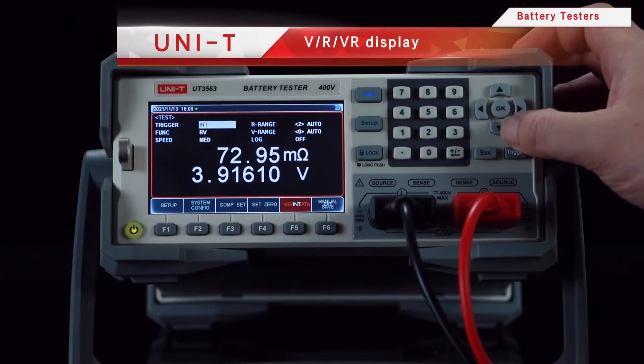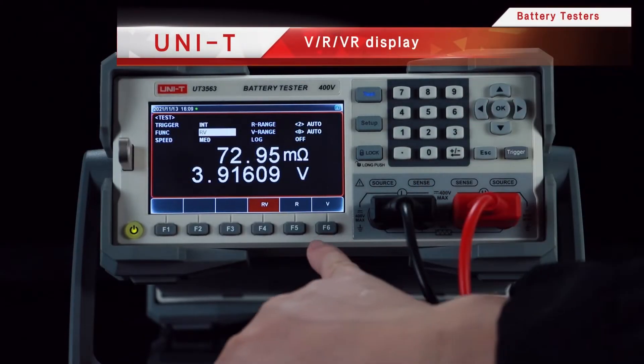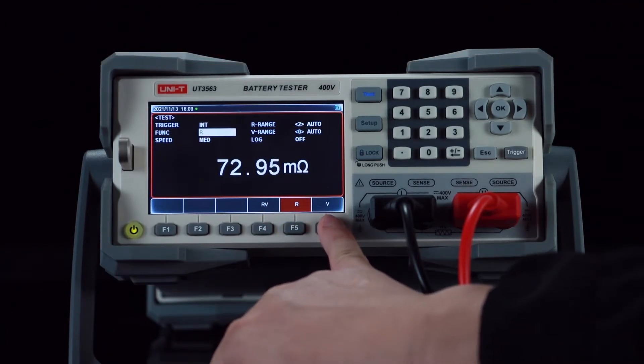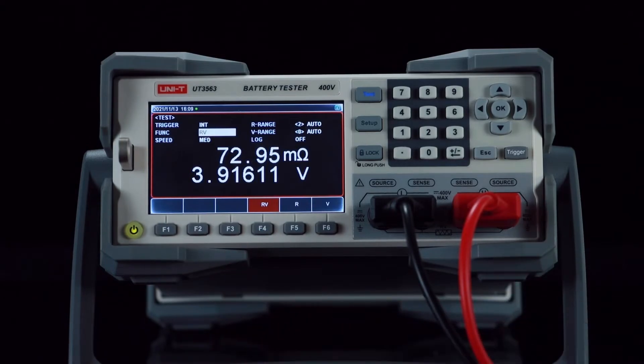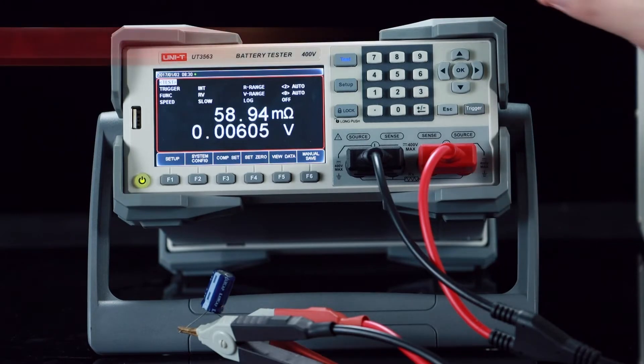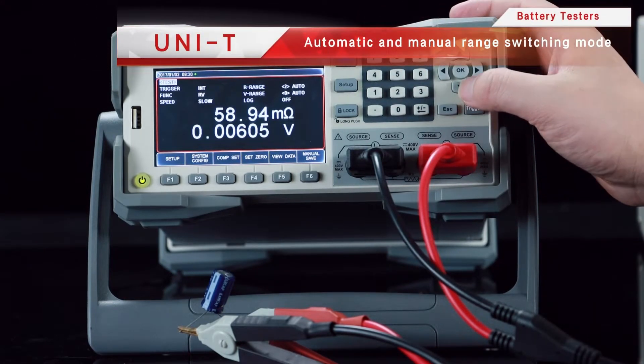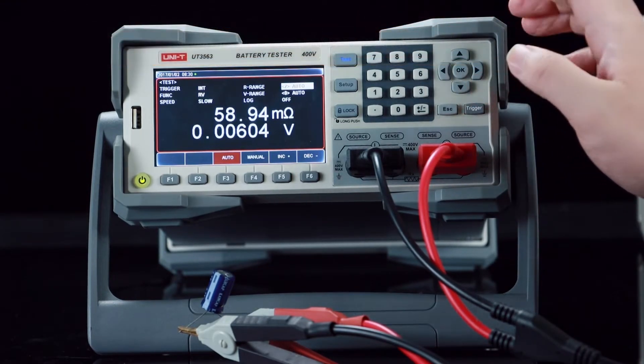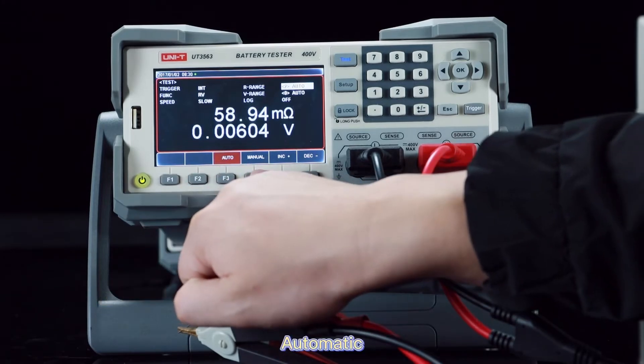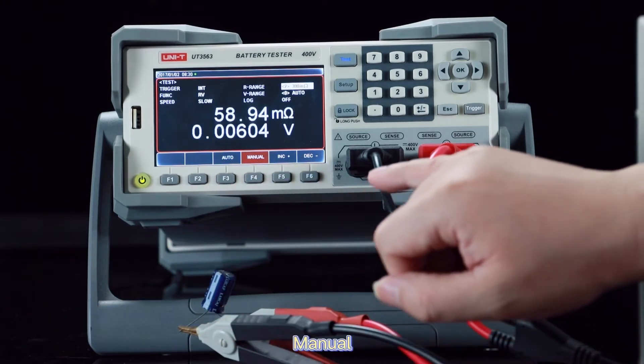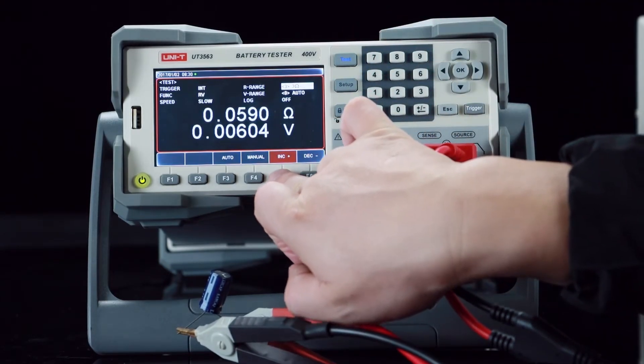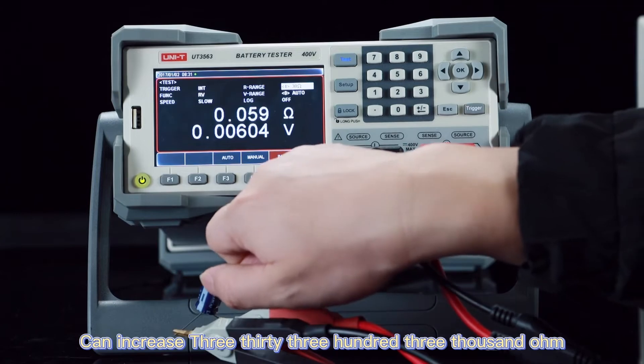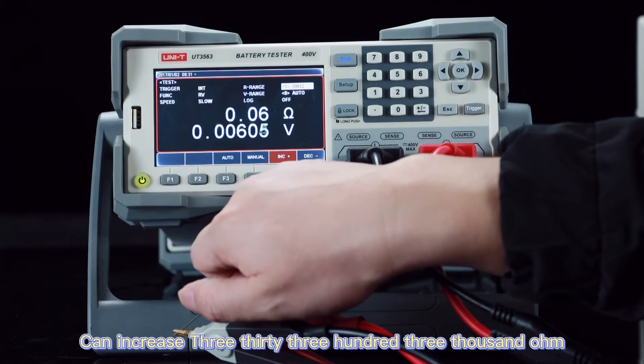VR display. Automatic and manual range switching mode. The range can be changed manually here. Can increase 330, 300, 3000 ohm.